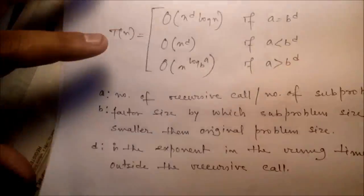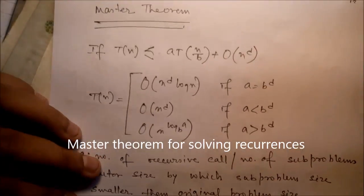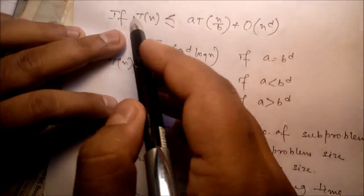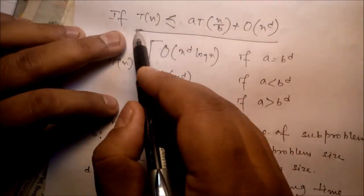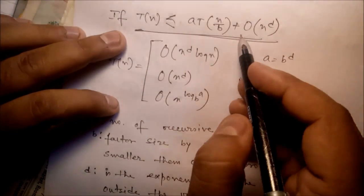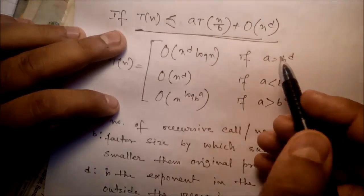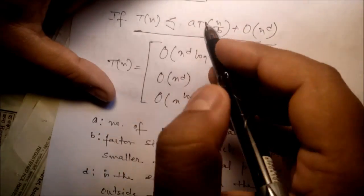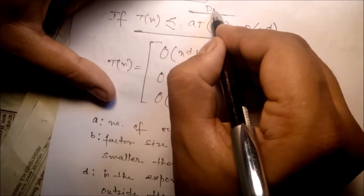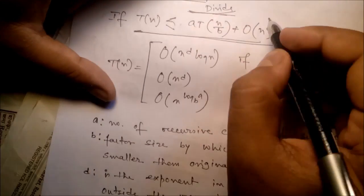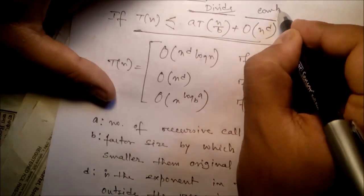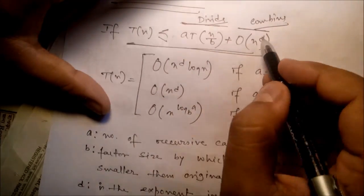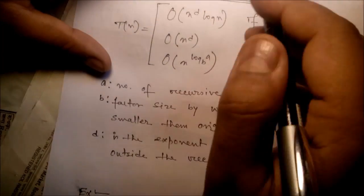Next, the Master Theorem — a very important theorem to get the time complexity of divide-and-conquer algorithms. The form is: T(n) = a·T(n/b) + O(n^d). Here, the divide part has complexity to divide and the combine part has time required to combine.